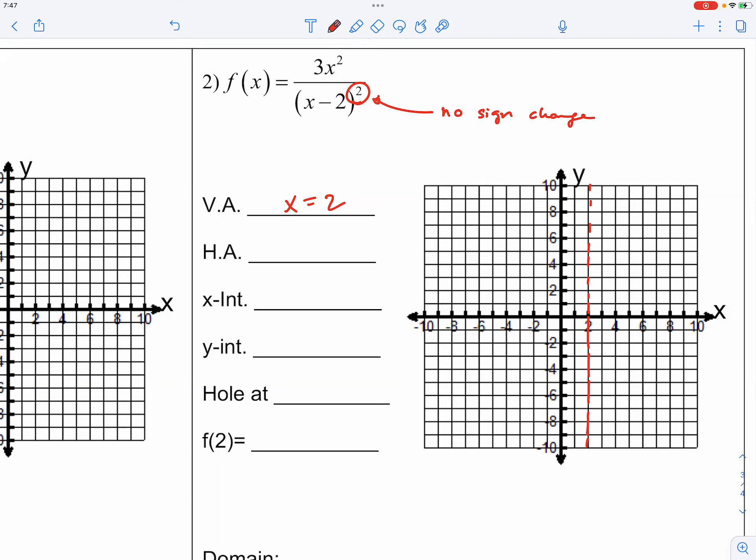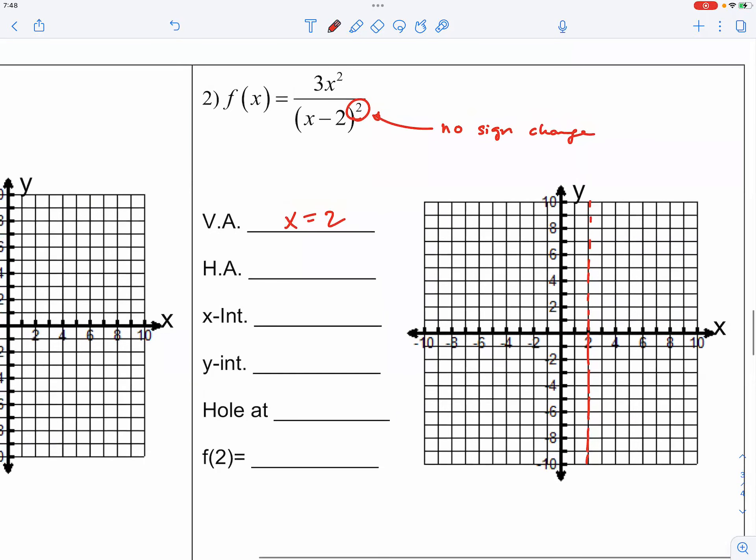There's no sign change because of the square. So we will see whether it's going to be positive and negative. Actually, I'm going to make a comment. See if you can make sense out of it. And this is one simple yet important sense-making process. I'm going to say this. This fraction right here is always positive. Can you see why? Everything is squared, right? I mean, the 3 is positive. The x is squared. The x minus 2 is squared. That means this whole fraction can only be positive.